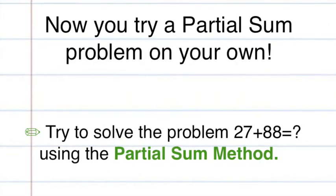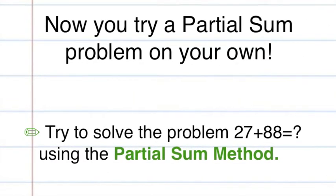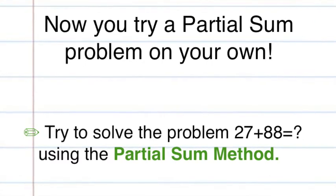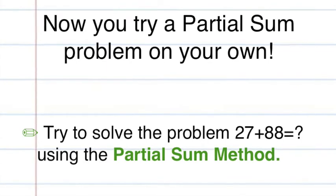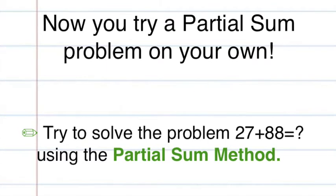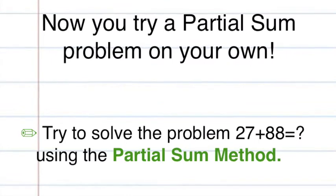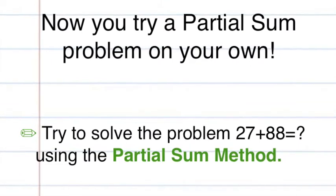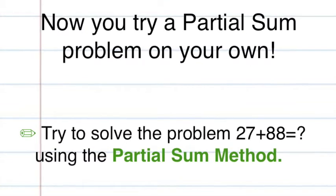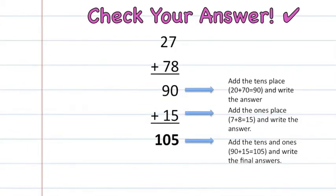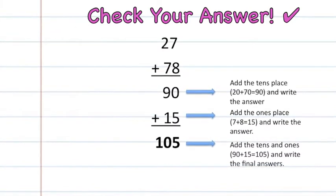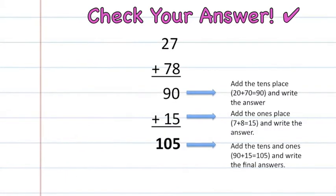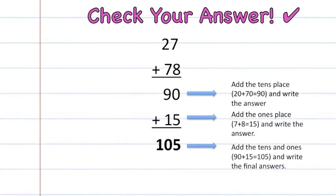Now I know you are all dying to try one on your own, so here is the problem: solve 27 plus 88 using the partial sums method. Alright, everybody check your answer. Did everyone get 105? If not, that is alright — we have a few more to go. But if you did, great job.